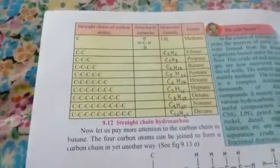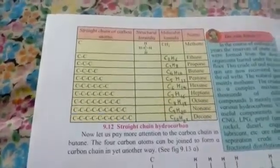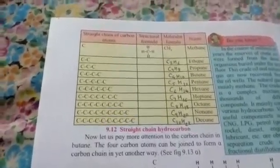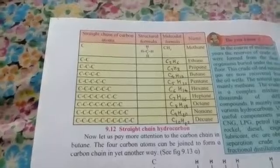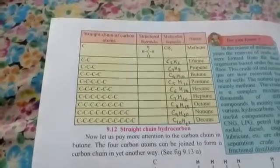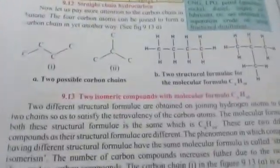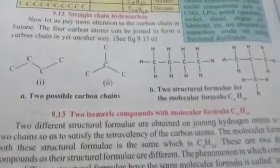Similarly for alkynes, the general formula is CnH2n−2, and there is going to be a triple bond. Now let's move forward.